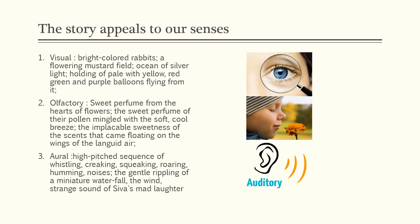The story overall appeals to our senses. For the visual sense, we get bright colored rabbits, a flowering mustard field, golden mustard fields which are like melting gold, and an ocean of silver light holding pale yellow, red, green, and purple balloons flying from it. For olfactory — that is smell — we smell the sweet perfume from the hearts of flowers, the sweet perfume of their pollen mingled with a soft cool breeze, and the implacable sweetness of scents floating on the wings of the languid air. For the aural or auditory sense, there is the high-pitched sequence of whistling, creaking, squeaking, roaring, and humming noises — the din and bustle of the fair — the gentle rippling of a miniature waterfall, the wind, and a strange sound of Siva's mad laughter.